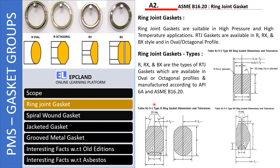If you see, this is R type — these two are R type: oval and octagonal. This is oval and this is octagonal. These dimensions are given in ASME 16.20. Rx type — this is oval shape. Why it is there, we will talk in the next slide in detail.